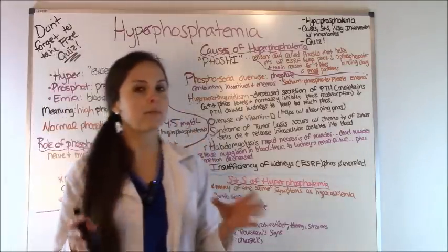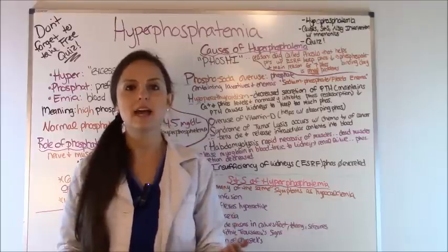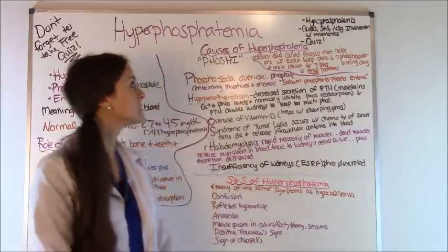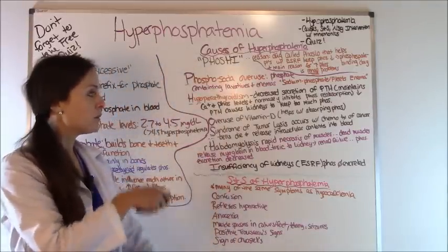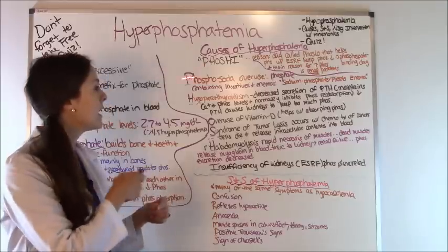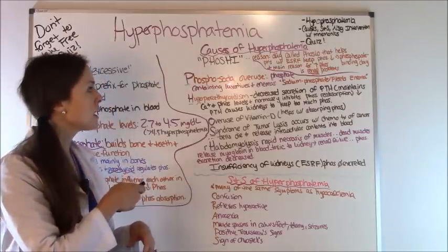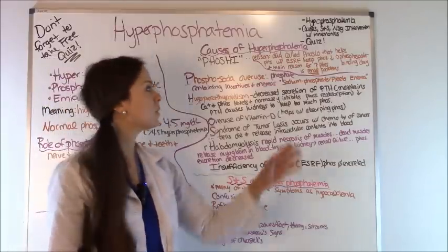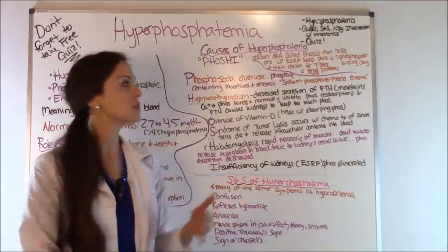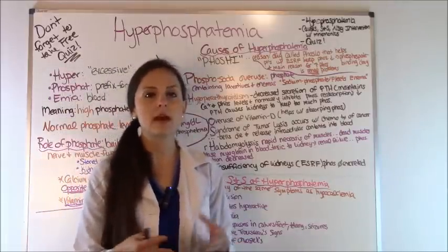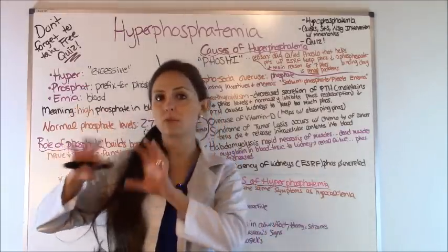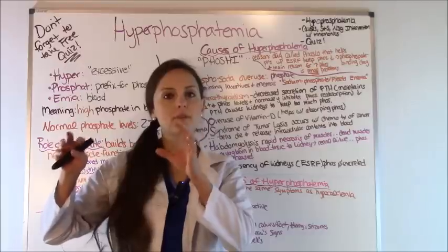Typically whenever a patient has a high phosphate level it's because the kidneys aren't working — that is usually 99% of the reason a phosphate level would be high. The first part, P, stands for Phosphosoda overuse — laxatives and enemas that contain phosphate such as Fleet's enema or sodium phosphate enemas. You never want to give these to patients who have renal problems because it's going to increase those phosphate levels since their kidneys can't get rid of the phosphorus, sending them into hyperphosphatemia.